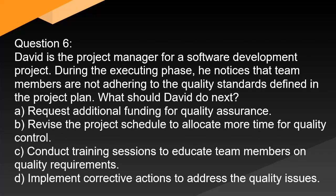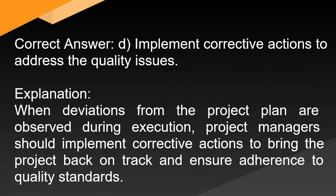Question 6: David is the project manager for a software development project. During the executing phase, he notices that team members are not adhering to the quality standards defined in the project plan. What should David do next? A. Request additional funding for quality assurance. B. Revise the project schedule to allocate more time for quality control. C. Conduct training sessions to educate team members on quality requirements. D. Implement corrective actions to address the quality issues. Correct answer: D. Implement corrective actions to address the quality issues. Explanation: When deviations from the project plan are observed during execution, project managers should implement corrective actions to bring the project back on track and ensure adherence to quality standards.